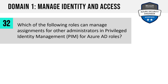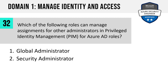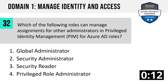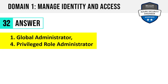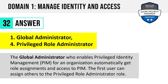Question 32. Which of the following roles can manage assignments for other administrators in Privileged Identity Management for Azure AD roles? Global administrator, security administrator, security reader, or privileged role administrator? Note that this specifically calls out Azure AD roles, not Azure roles. The answer is one: global administrator, and four: privileged role administrator. The global administrator who enables PIM for an organization automatically gets role assignments and access to PIM, and that first user can then assign others the privileged role administrator role to manage the PIM feature.